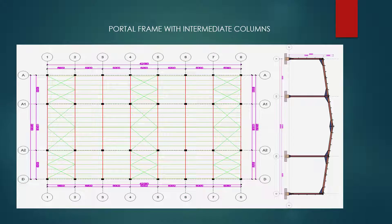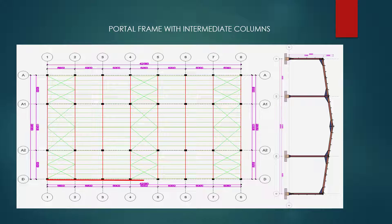Hello everyone, today we are going to learn portal frame with intermediate columns. Our portal frame's total span length is 30 meters, our y-axis is 42 meters with 6 meters of spacing.